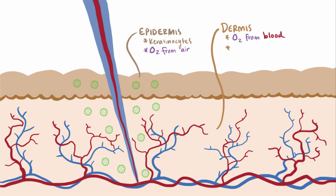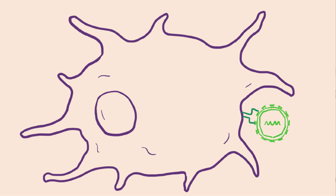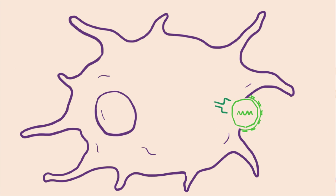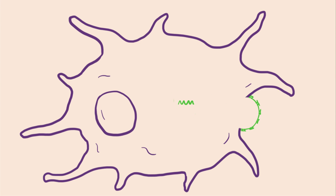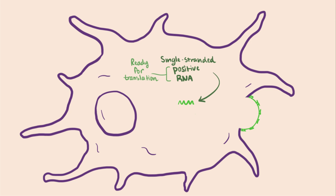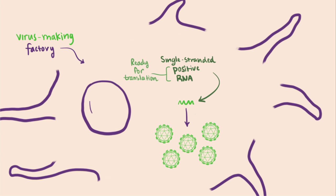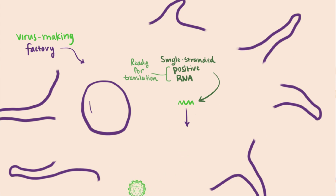So in addition to keratinocytes, fibroblasts and dendritic cells have also been found to be permissive to Zika virus, meaning they have some sort of receptor or attachment site that basically says, come on in. When it enters the cell, it injects a single-stranded positive RNA strand. Positive means that this piece of RNA is a lot like our own mRNA — it's basically ready to rock and get translated into proteins. The virus's genome is translated by our own cellular machinery into more viruses. Eventually, those cells-turned-virus-making factories die, which actually ends up releasing more viruses to infect more cells.